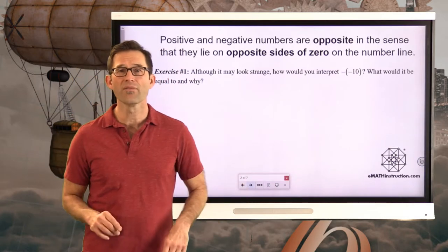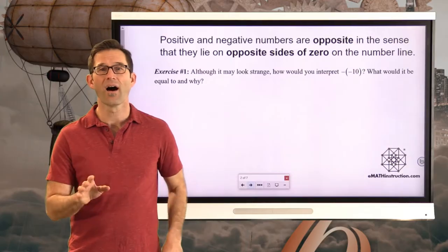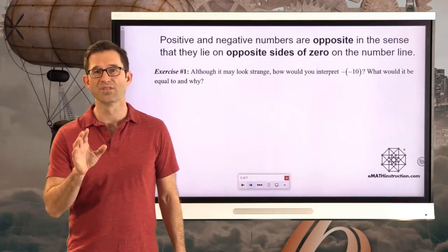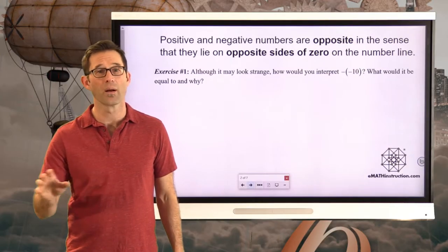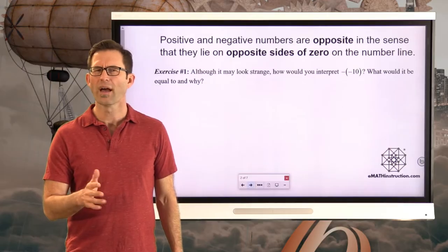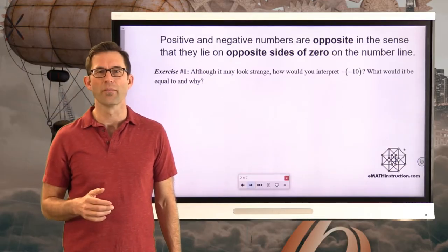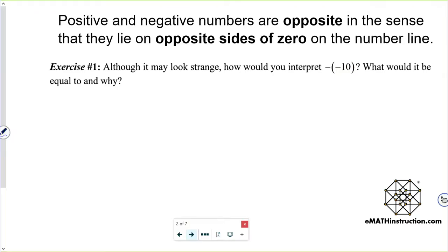Positive and negative numbers are opposite in the sense that they lie on opposite sides of zero on the number line. Exercise number one is a thought experiment. Although it may look strange, how would you interpret negative negative 10? What would it be equal to and why? See if you can write something down — I bet you're going to have the right answer. Pause the video now.